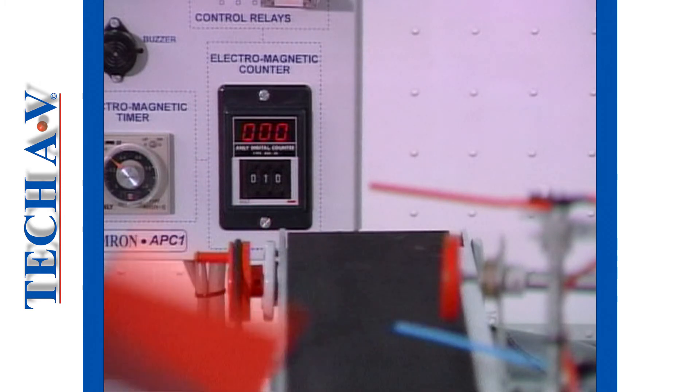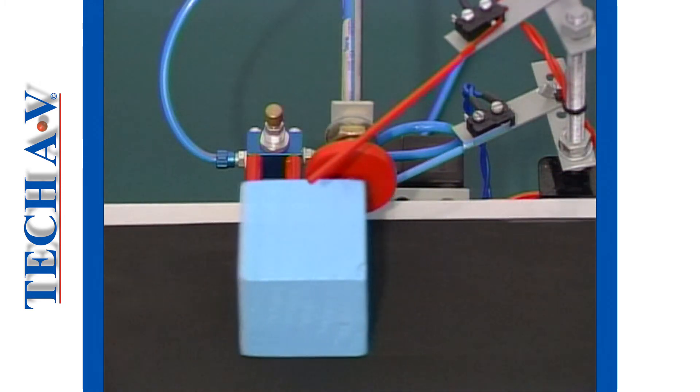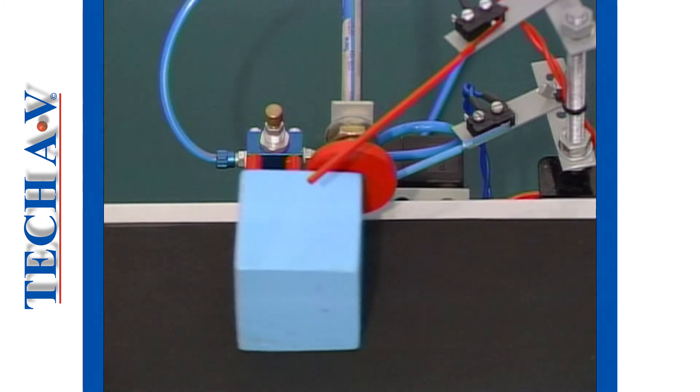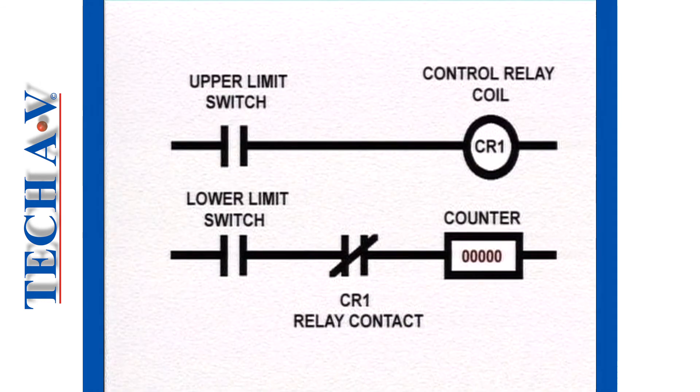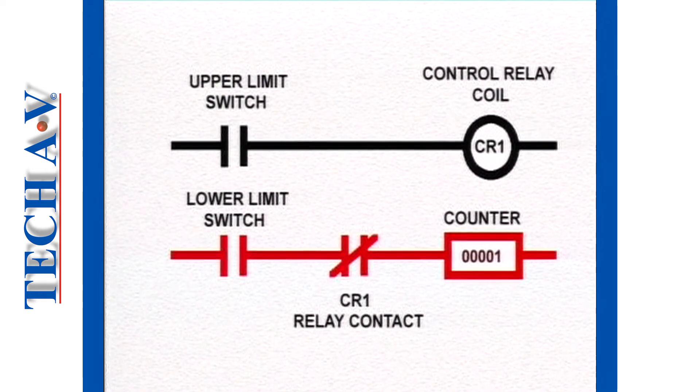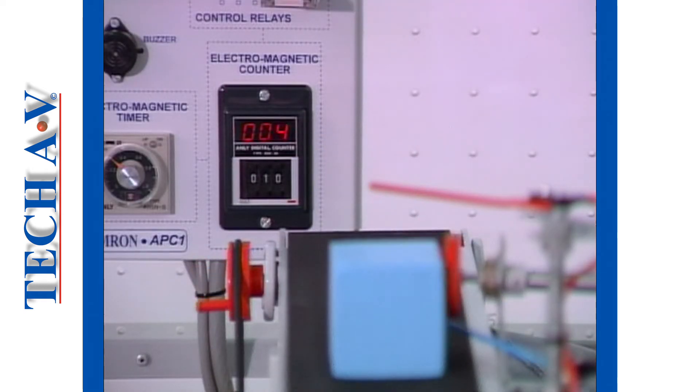But when a short block passes by, only the lower limit switch is closed. And since the upper limit switch is not activated, neither is the control relay. So its contacts remain inactive, which means that its normally closed contacts will remain closed and power will flow to the counter recording a count.